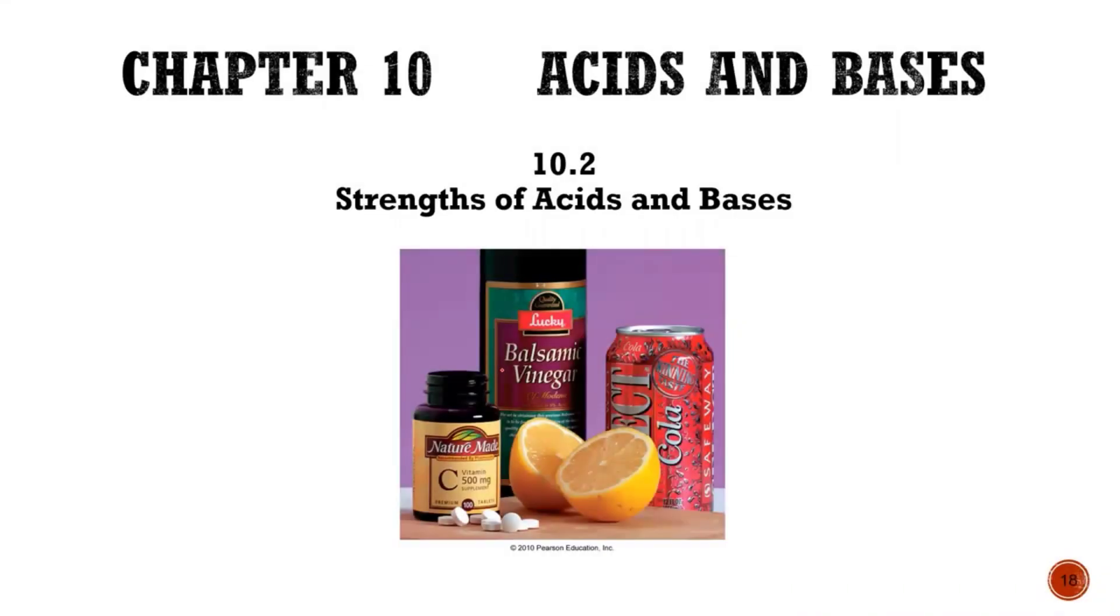How do we know if something is a strong acid? Because strong acids go in one direction, right? Versus a weak acid that has a double arrow and creates an equilibrium. So that's what this section's about, is how do I know the strong acids and strong bases?